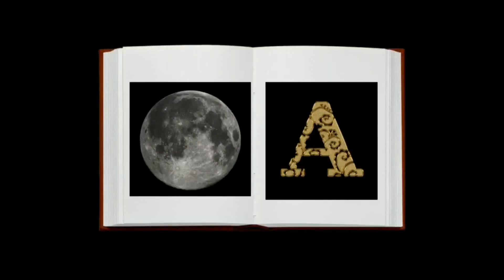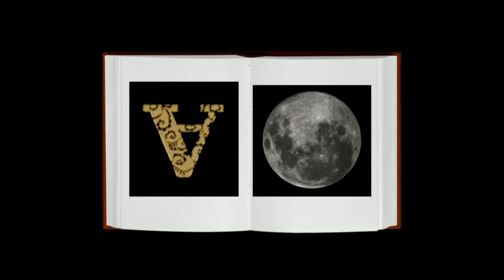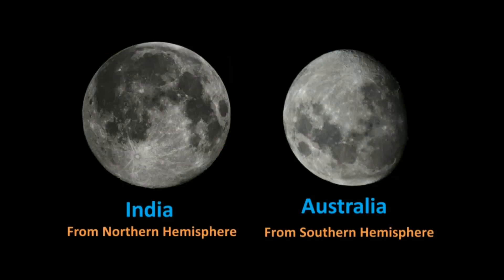For example, if you write the alphabet A and see it from one side and then see it from the opposite side, you will see it is upside down. The same thing happens with the moon when you see the moon from different hemispheres.